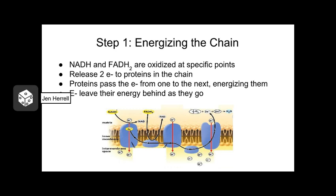As electrons near the end of the chain, somebody has to be there to catch them. Electrons are extremely reactive and can cause problems if they're unattended. You have to have a molecule present that's willing and able to catch the electrons as they come out of the chain. These electron catchers actually pull the electrons out of the chain, keeping electrons flowing through.